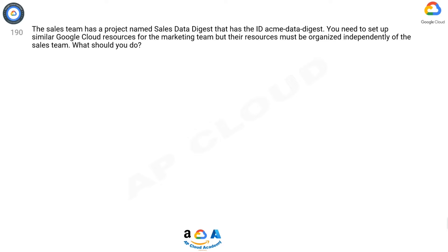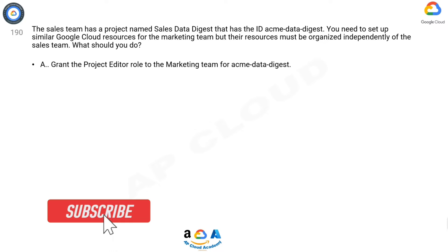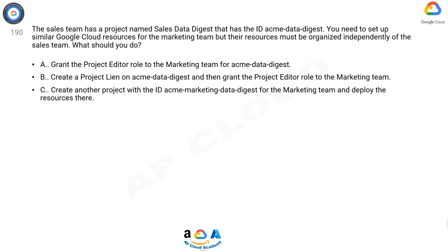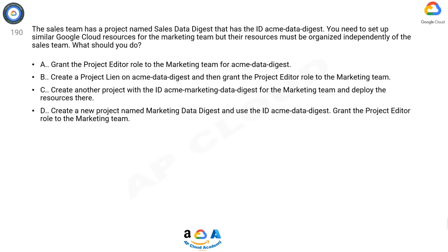What should you do? A: Grant the project editor role to the marketing team for acme-data-digest. B: Create a project linked to acme-data-digest and then grant the project editor role to the marketing team. C: Create another project with the ID acme-marketing-data-digest for the marketing team and deploy the resources there. D: Create a new project named Marketing Data Digest and use the ID acme-data-digest, then grant the project editor role to the marketing team.